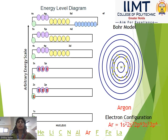Next, argon is an inert, stable gas with atomic number 18 and symbol Ar. Its configuration is 1s², 2s², 2p⁶, 3s², 3p⁶. From the diagram: first shell has 2 electrons, second shell has 8 electrons, and the third shell has 8 electrons.